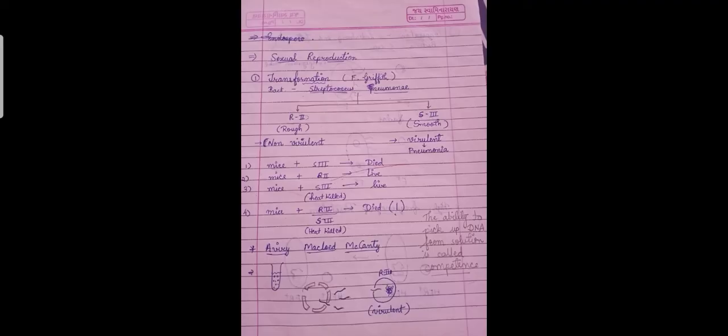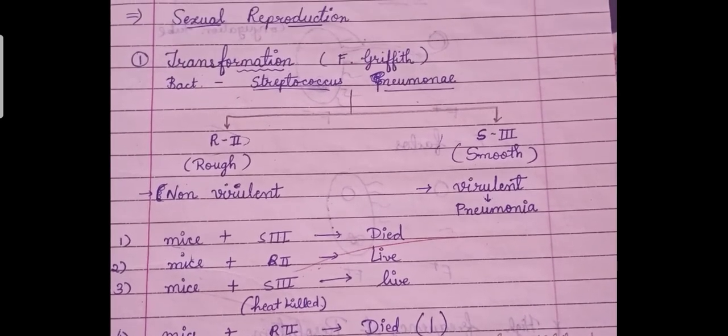The very first means of reproduction is asexual reproduction. The first experiment was done by Frederick Griffith, who experimented on mice. He inserted bacteria — specifically Streptococcus pneumoniae — into the mice.